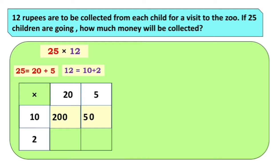Aata aplella 2 multiply by 20 karaije. 2 ne ya 2 la multiply karaije, so 2 × 2 za 4, aani 1, 0 from this 20. Now let's multiply 2 and 5: 2 × 5 za 10.